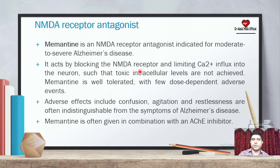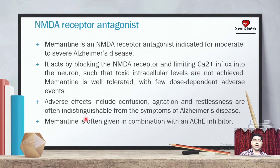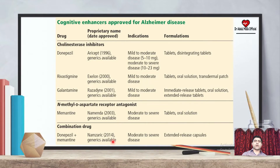Memantine acts by blocking the NMDA receptor and limiting calcium influx into the neuron, such that toxic intracellular levels are not achieved. Memantine is well tolerated with few dose-dependent adverse effects. Adverse effects include agitation and restlessness, which are symptoms of Alzheimer's disease. Memantine is often given in combination with cholinesterase inhibitors.